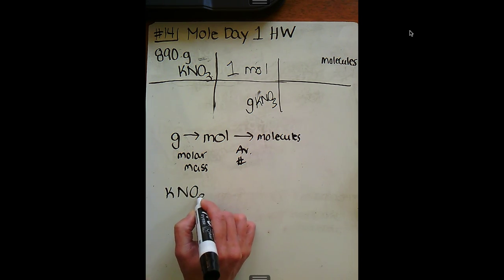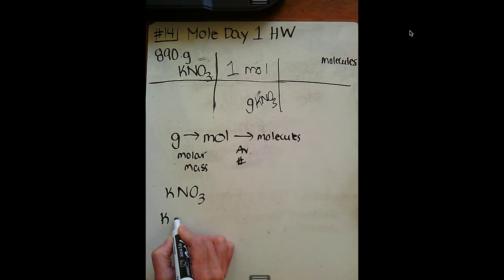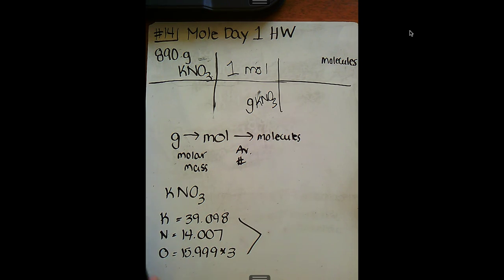Let's come right down here and do that. We know that potassium equals 39.098. We know that nitrogen equals 14.007. We know that oxygen equals 15.999 times 3, because there are three oxygens there. If you'll give me just a moment, I'm going to put all of this into my calculator and I'm getting 101.102 grams.